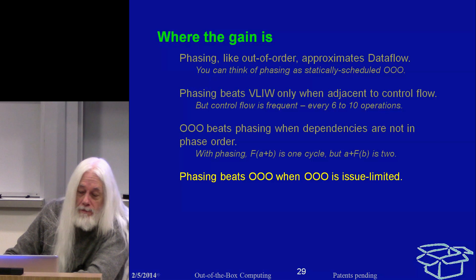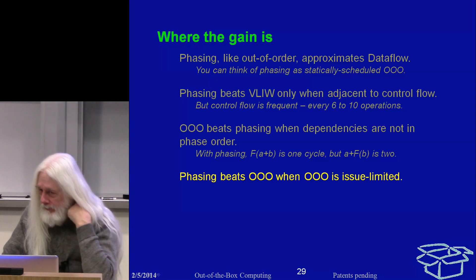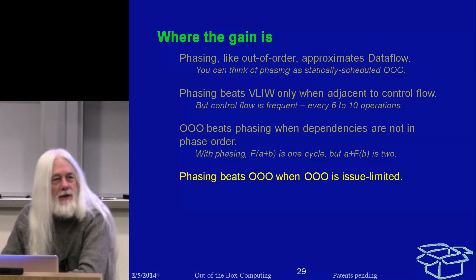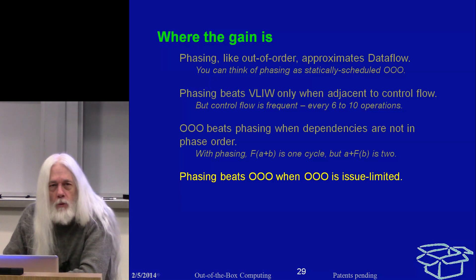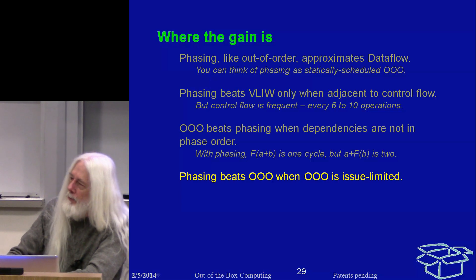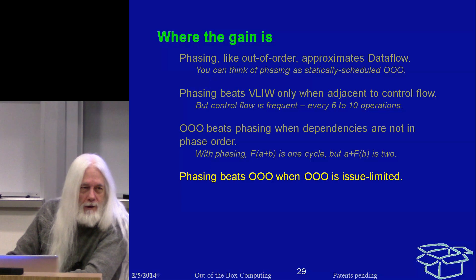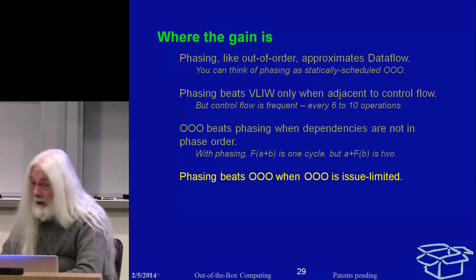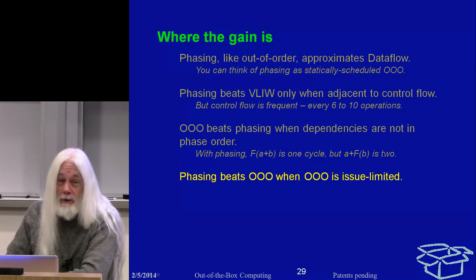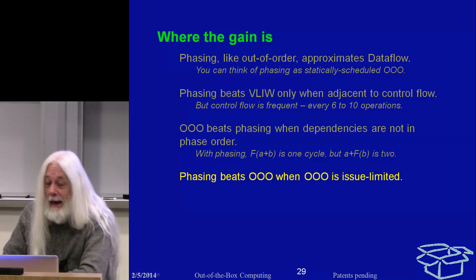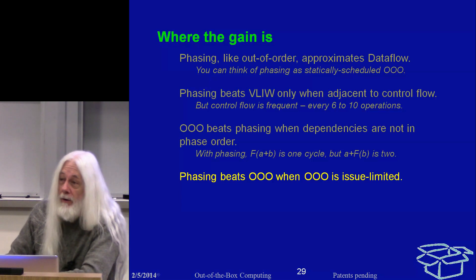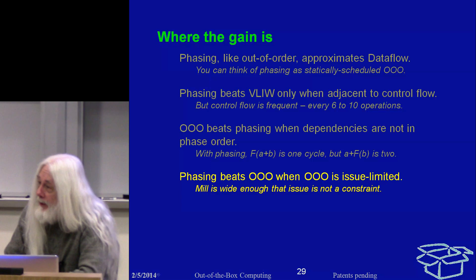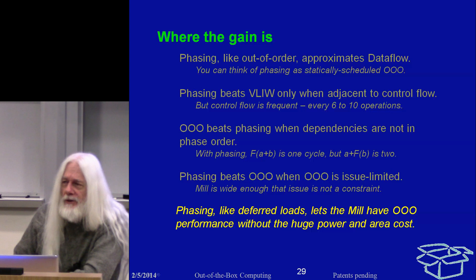Phasing beats out-of-order when the out-of-order machine is issue-limited. The Mill is very wide, and out-of-order machines are hitting hardware limits which preclude an issue width of more than about eight — Haswell is eight, for example. If you want to put together data flows totaling a dozen operations, you're issue-limited on an out-of-order machine. Furthermore, out-of-order hardware is extraordinarily complex, large, and power-hungry, and you've hit diminishing returns. The Mill does not have these constraints — it is extremely power-stingy and puts its area into functional units, which are tiny.